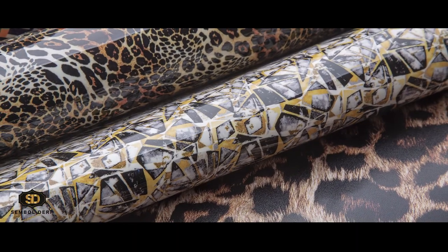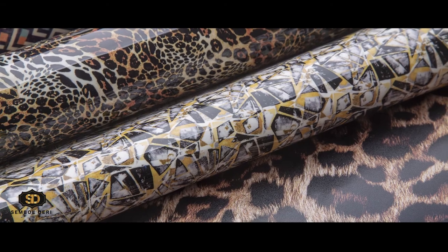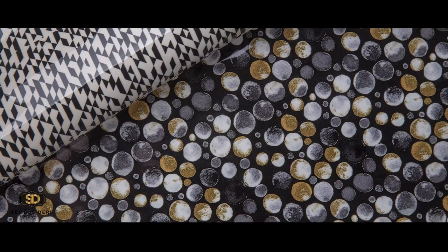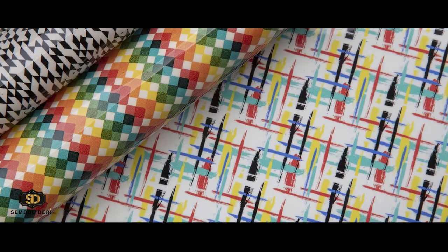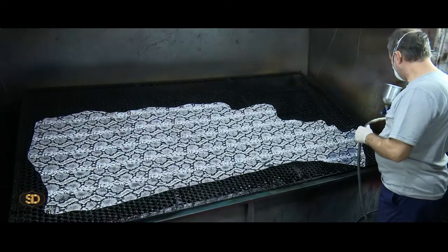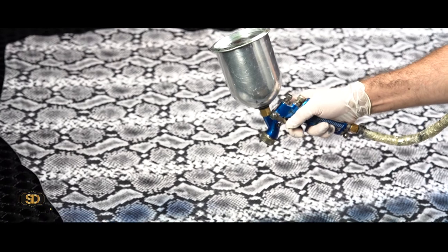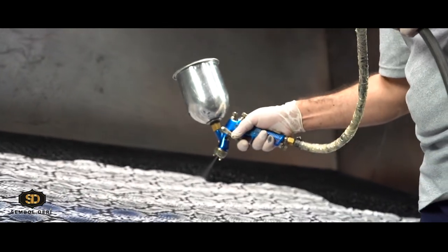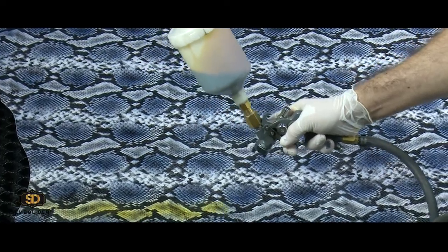Sembol Leather has aimed to produce high added value and original qualified products. Thus, Sembol Leather managed to become the first company making digital printings on genuine leather in Turkey, making the future of the sector strong with its strong vision.